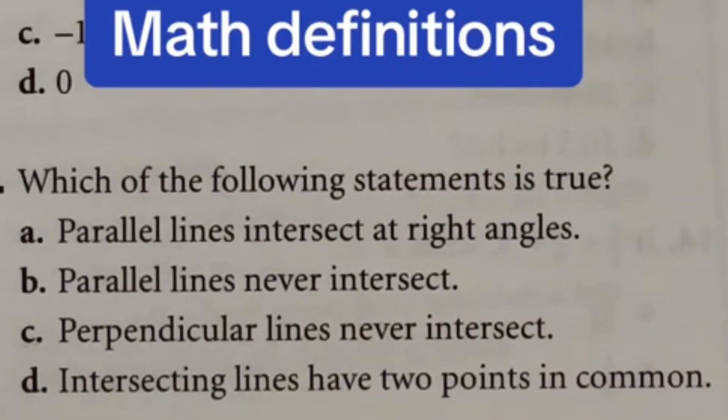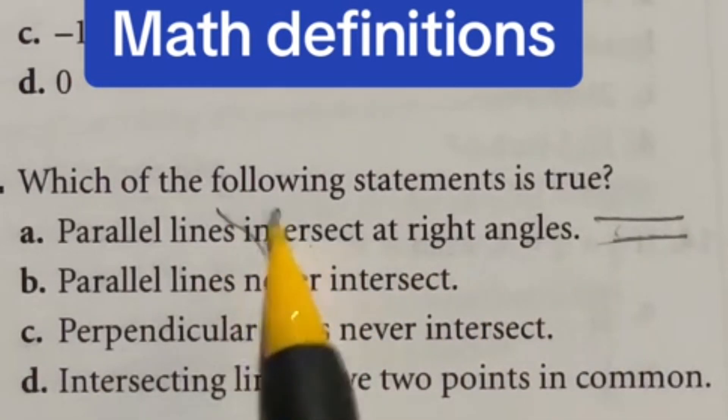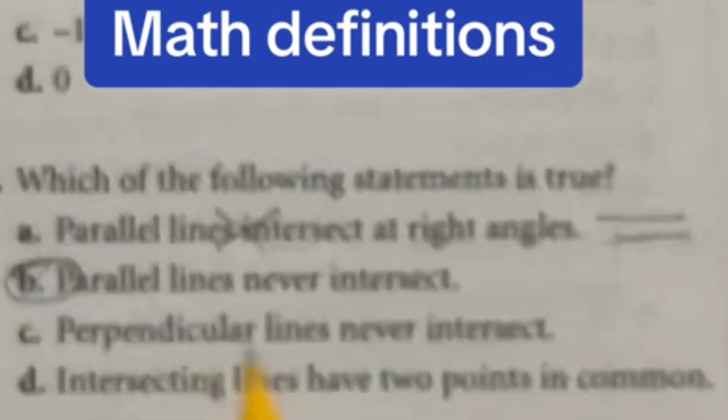Number nine is just a vocab game. It says which one of the following statements is true? Parallel lines intersect at right angles. Well, parallel lines actually mean two lines that never touch, that they do not intersect. So this one's out. Parallel lines never intersect. Well, I just said that, so that means our answer is B. Let's double check with the rest.